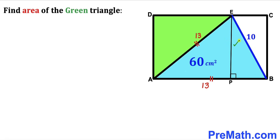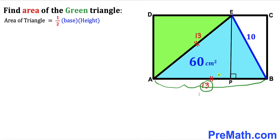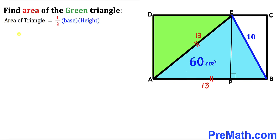Next, I drop a perpendicular EP onto side AB. Using the area formula again: Area = ½ × base × height. For the blue triangle, the base is 13 cm, the height is EP, and the area is 60 cm².